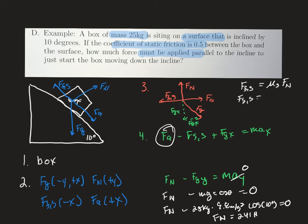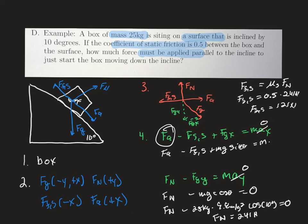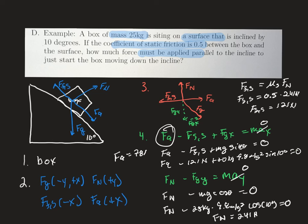Plugging in: the coefficient is 0.5 times 241 newtons, so the static friction force equals 121 newtons. Now we know: force applied minus 121 newtons plus mg·sin(θ) equals zero, because we're not moving yet — we're just starting the motion. So: force applied minus 121 N plus 25 kg × 9.8 m/s² × sin(10°) = 0, which gives force applied equal to 78 newtons.